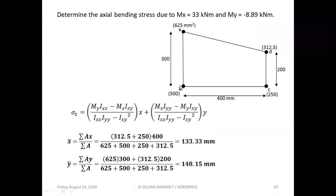x-bar = (Σax) / (Σa). Let me take stringer B as my reference. 312.5 × 400 + 250 × 400 — the other two stringers will not give any x-distance contribution, so only these two multiplied by 400, divided by the sum of all stringer areas. So x-bar is 133.33 mm from boom B.